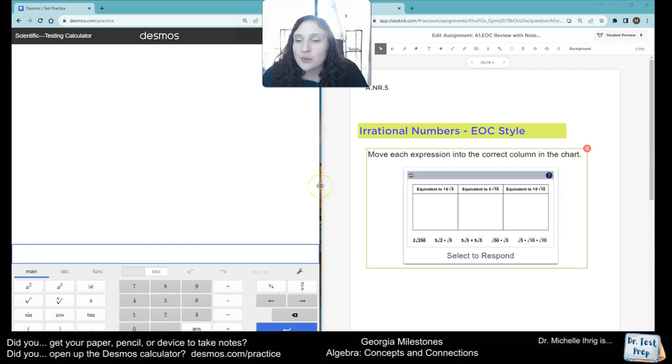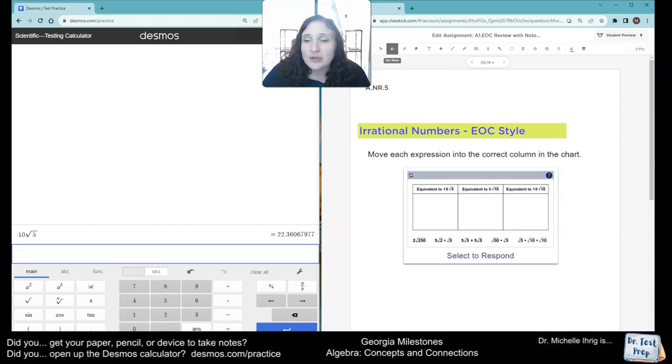Notice how this says which is equivalent to 10 square roots of 5. Well, what the heck does that mean? Well, let's type in 10 square roots of 5. 10 square roots of 5 gives me something around 22, let's do blue, 22.36.